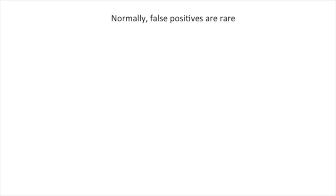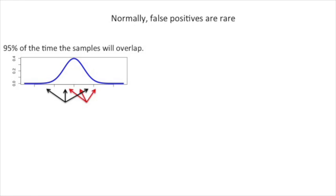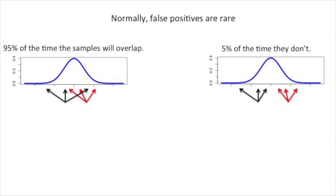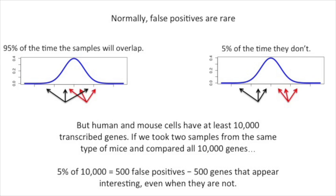Normally, false positives are rare. 95% of the time, the two samples will overlap, resulting in a p-value greater than 0.05. 5% of the time, they don't, resulting in a false positive with a p-value less than 0.05. But human and mouse cells have at least 10,000 transcribed genes. If we took two samples from the same type of mice and compared all 10,000 genes, 5% of 10,000 equals 500 false positives. That means there will be 500 genes that appear to be interesting, even when they are not.